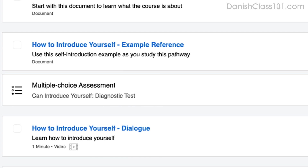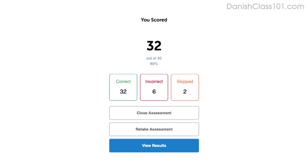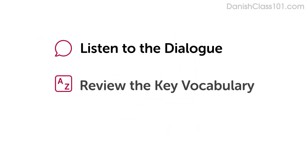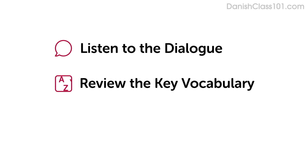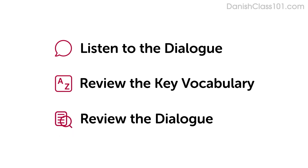Our team of teachers have designed a free quiz to determine your actual learning level. Click the link in the description to get your free assessment and unlock lessons that are right for you. In this lesson you'll listen to a dialogue with the text. Second, you'll review the key vocabulary followed by the English translations. And finally you'll review the dialogue with the text again to master what you learned.